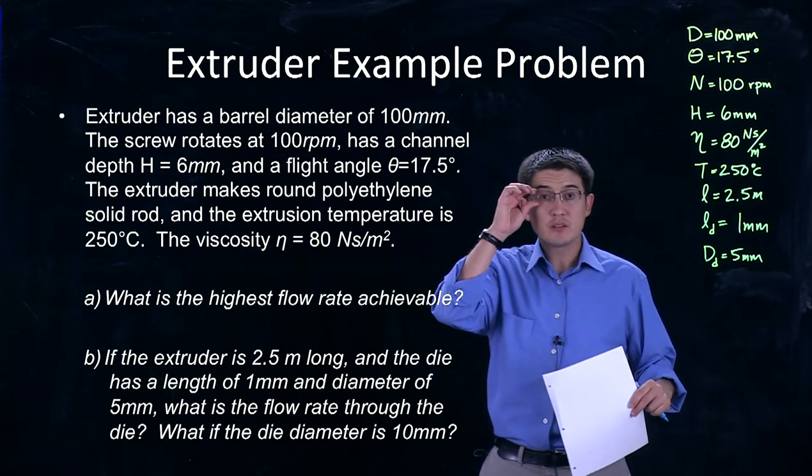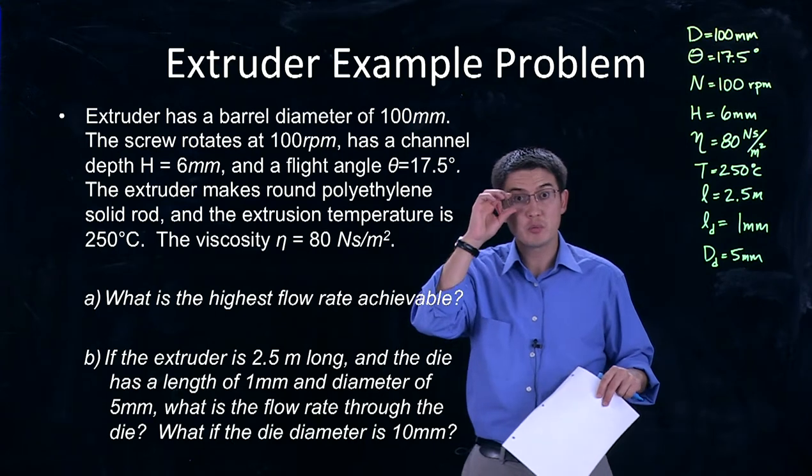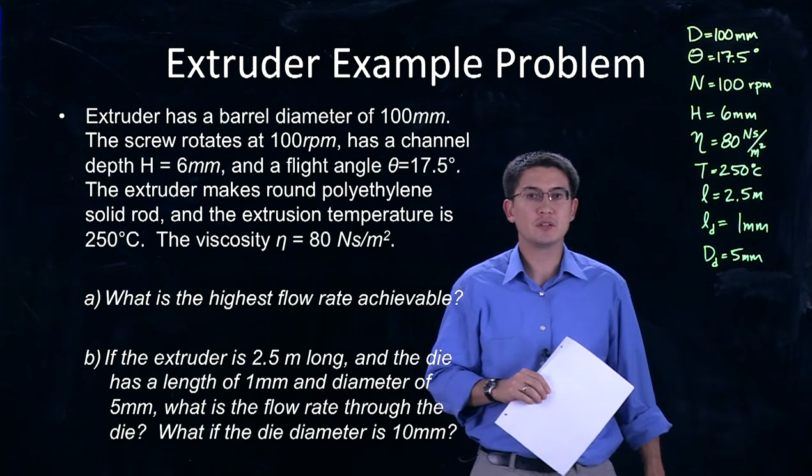This problem states that we have a barrel diameter of 100 millimeters and the screw rotates at 100 revolutions per minute. It has a channel depth of 6 millimeters and a flight angle of 17.5 degrees.